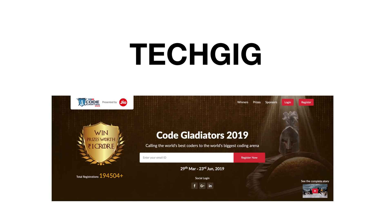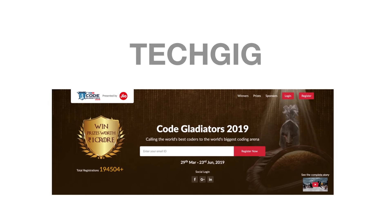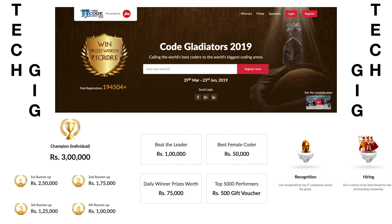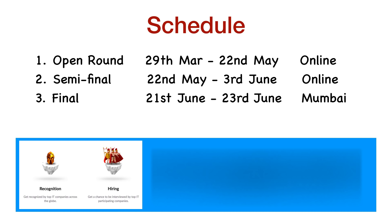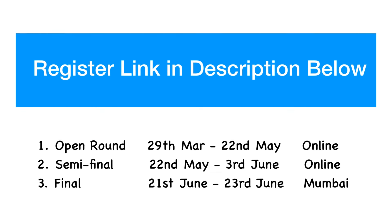Today's video is sponsored by TechCake, a massive community for competitive programming and hiring-related events. They have a great coding event coming up with prizes up to 1 crore Indian rupees — the champion gets 3 lakhs, and there are prizes for runner-ups, best female coders, and top 5000 performers who get 500 rupee gift vouchers. Top performers also get hiring exposure from IT companies. The open round runs March 29th to May 22nd, semi-finals May 22nd to June 3rd, and finals June 21st to 23rd in Mumbai. Registration link is in the description.